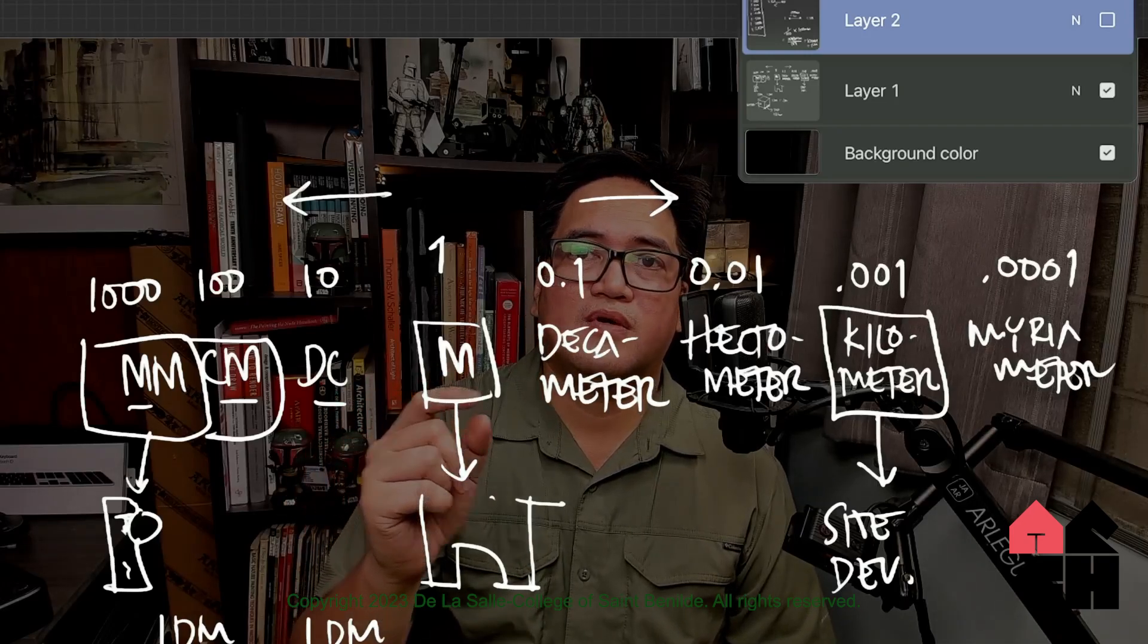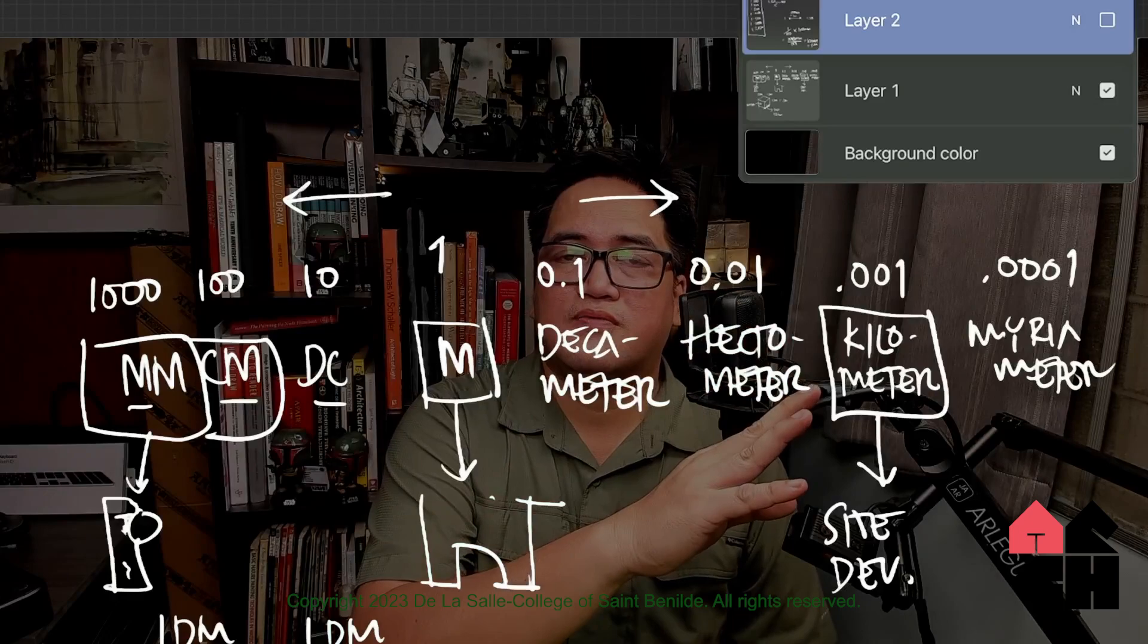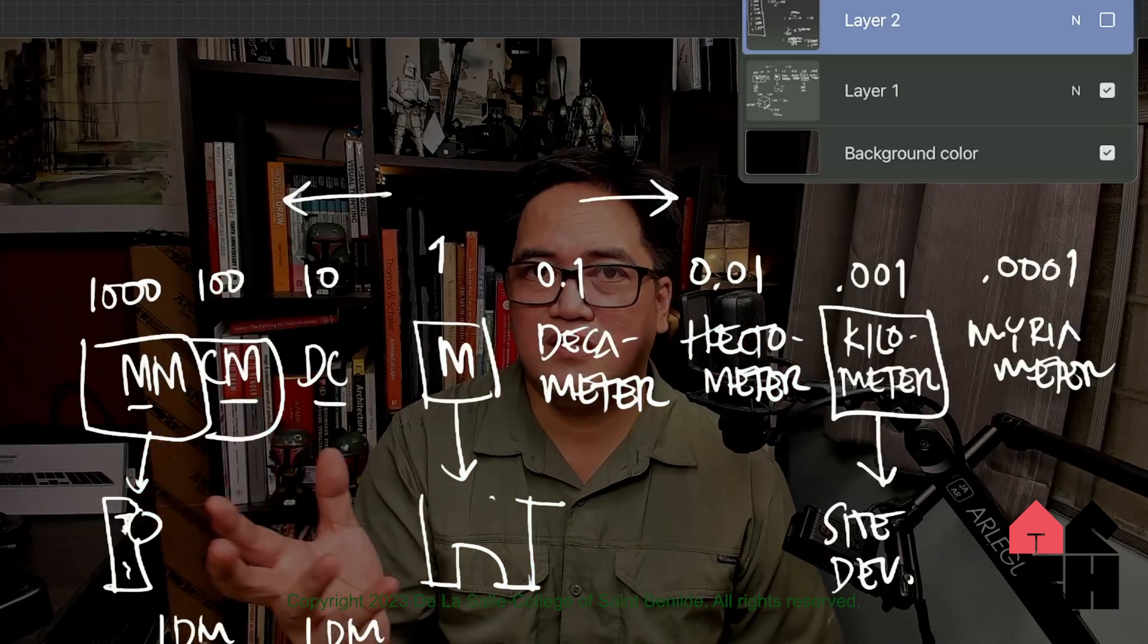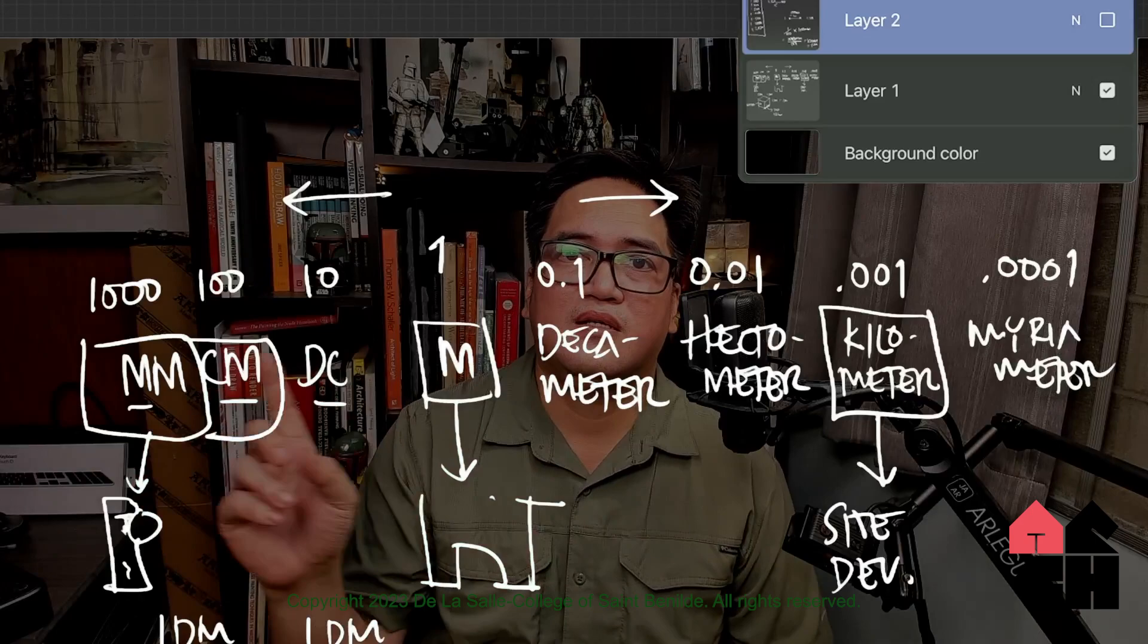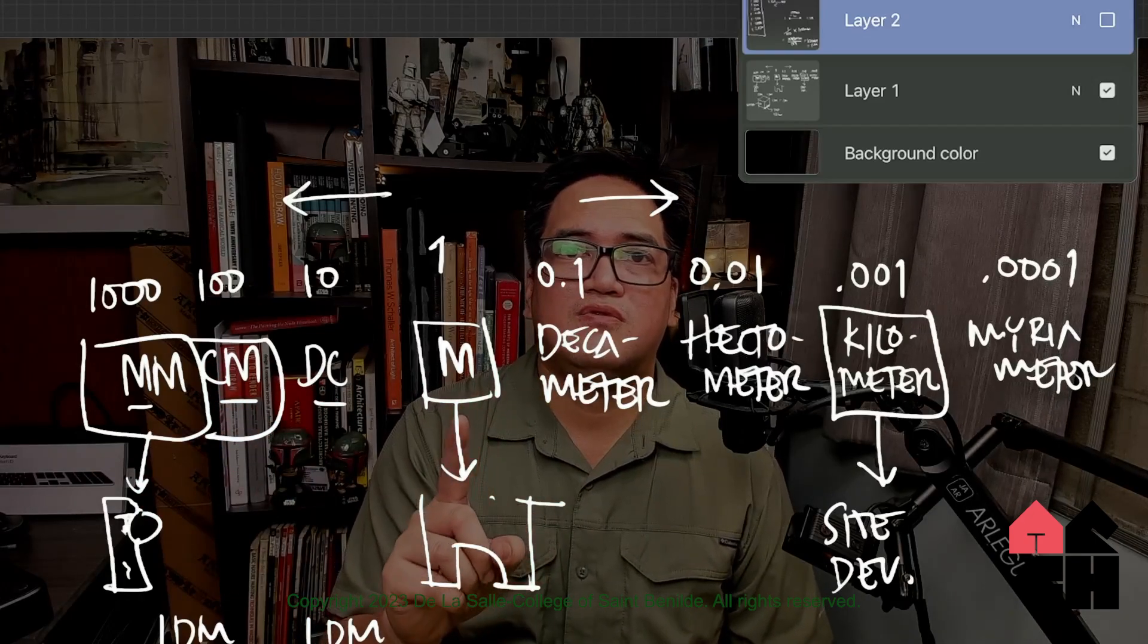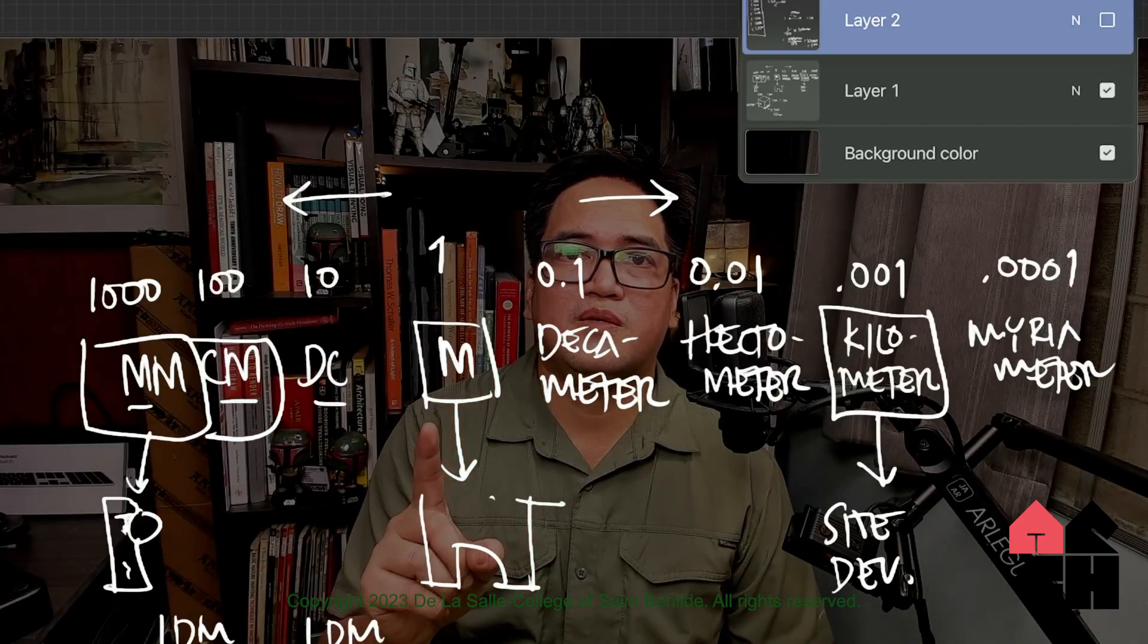Kilometers are for site distances. If you're illustrating a site development plan, that would be something. But these two units, meters and millimeters, are mostly what we use. I hope there's some clarification in this video explaining what is the metric system, what is scaling, how to calculate it if you don't memorize it, and what units to use when drawing architecture.